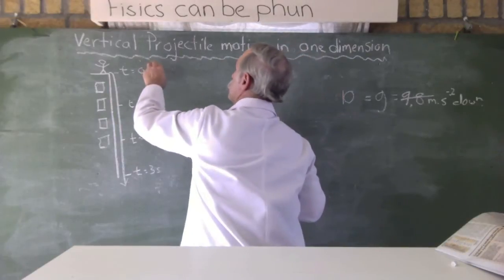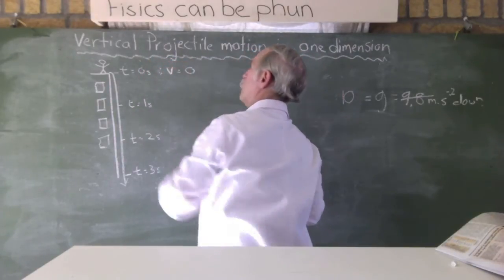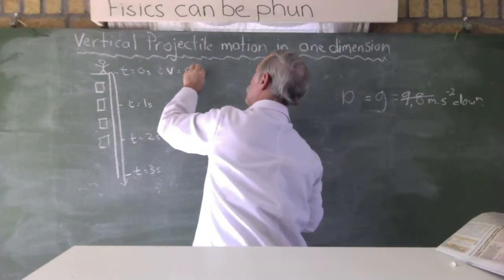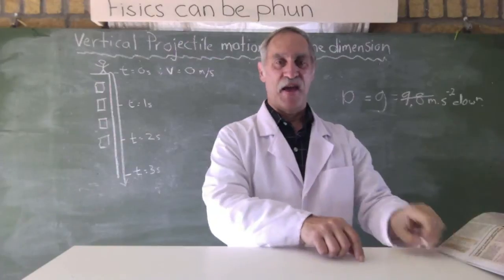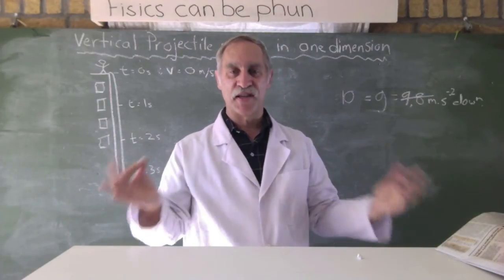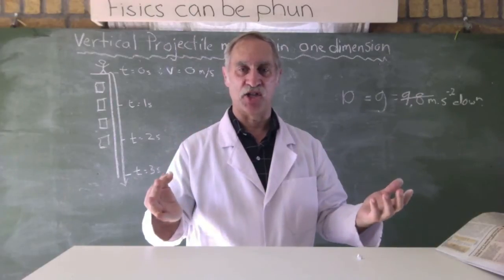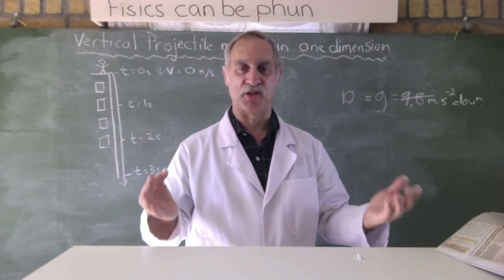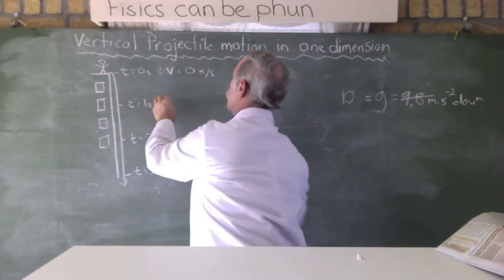And according to gravity being 10, meaning everything, every second, it accelerates by, it changes the velocity by 10 meters per second. After one second, what will the velocity be?